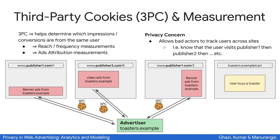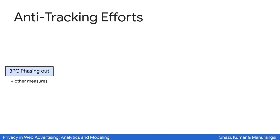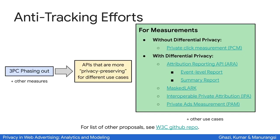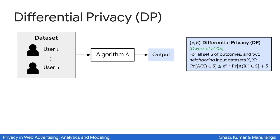To mitigate this risk, third-party cookies are being deprecated, and in place of them more privacy-preserving APIs are proposed. Many of these APIs use the notion of differential privacy, which will be the focus of our tutorial. Differential privacy is a mathematically rigorous way to quantify the privacy leakage of each user.